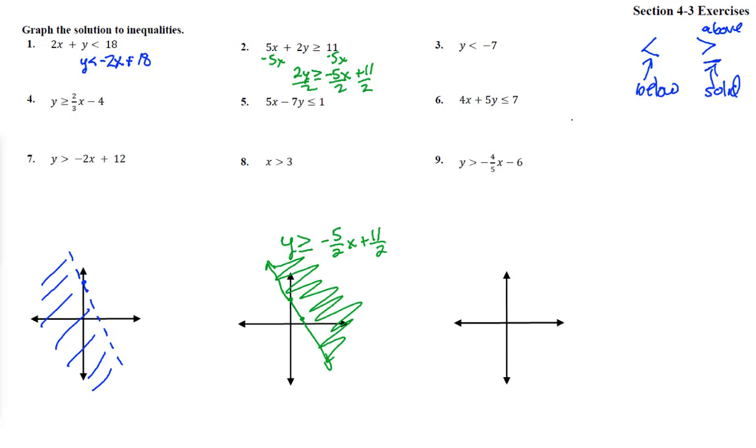Number 3. Y is less than negative 7. So y equals negative 7 would be down here at negative 7, and goes across this way. Notice we have no equal sign, so we need a dashed line right there. And it says y is smaller than that. So we're going to be down below the line, so it's going to be all that down there.